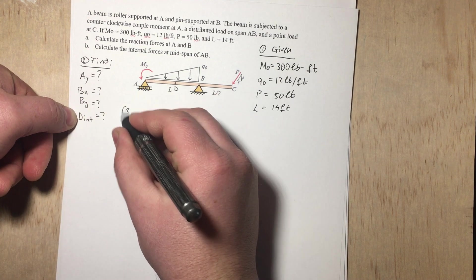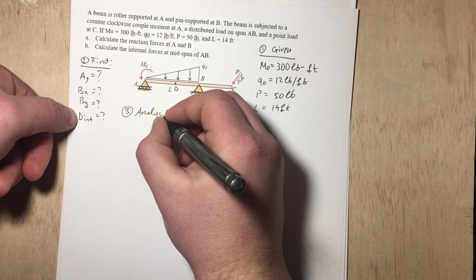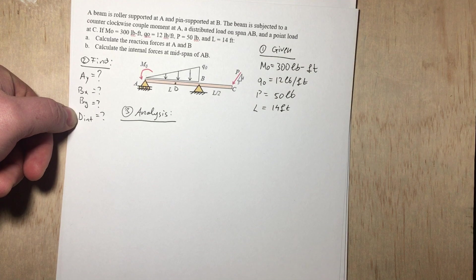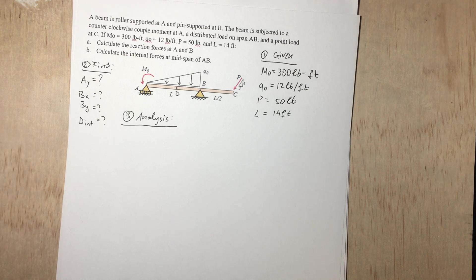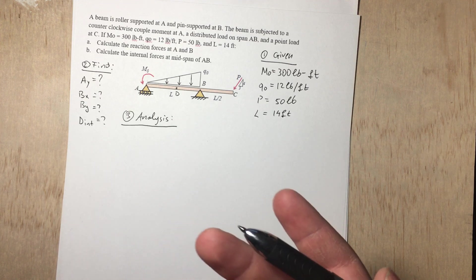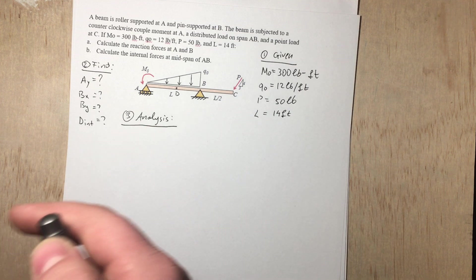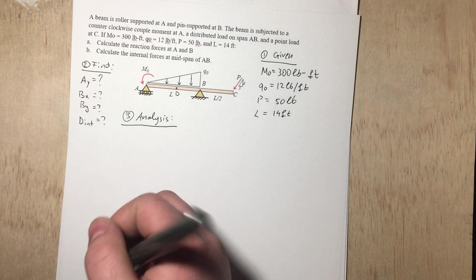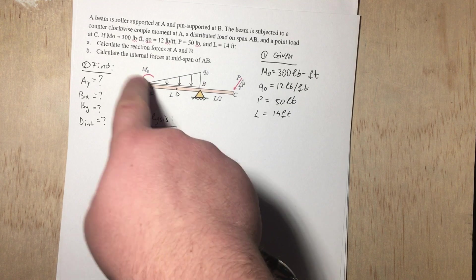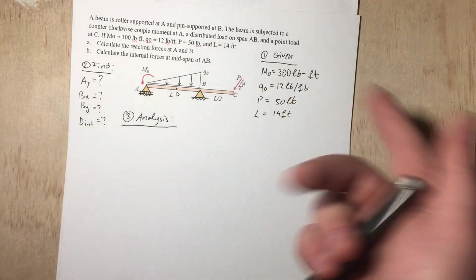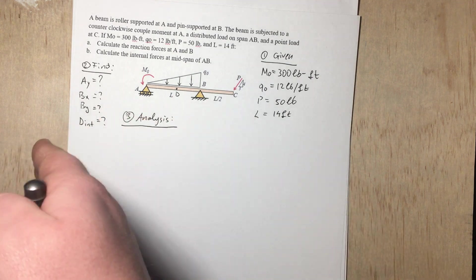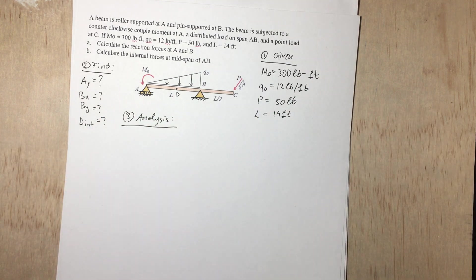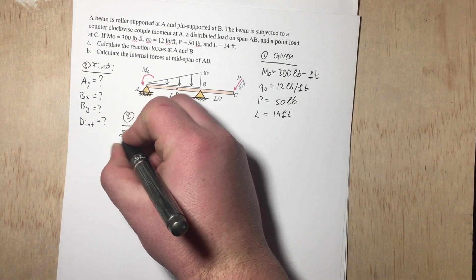Now we can analyze the problem. In statics, we don't have acceleration, so the sum of forces and sum of moments must equal zero. We have three equations: sum of moments around a point, sum of forces in Y, and sum of forces in X. I like to start by summing moments at point A, though you can sum at any given point — sometimes other points are easier.